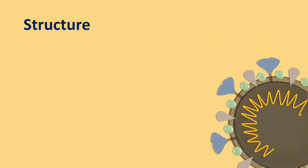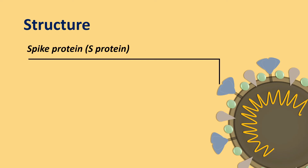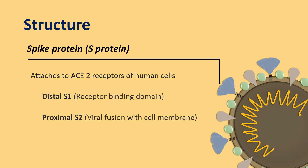Among several proteins found in SARS-CoV-2, there are 4 key proteins that are important. The spike protein, or S protein, helps in attaching the virus to the ACE2 receptors of human cells. It has a distal S1 segment which acts as the receptor binding domain and a proximal S2 which helps in viral fusion with the cell membrane. The spike protein is responsible for infectivity, virulence, and tissue tropism.